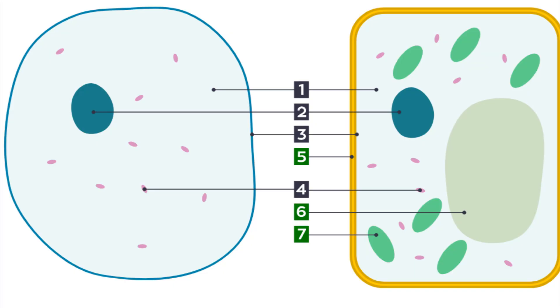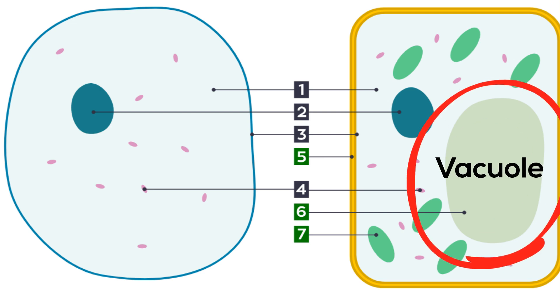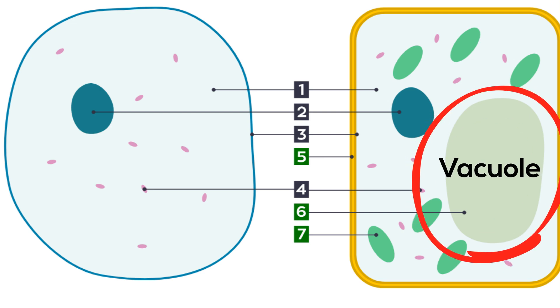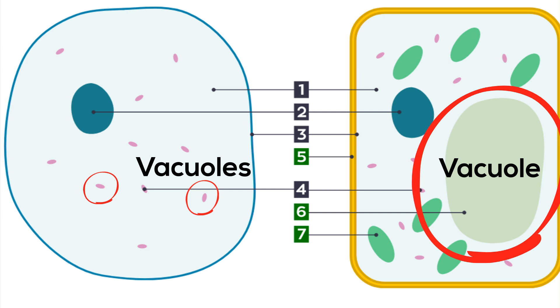And finally, a plant cell has a much larger vacuole than an animal cell. Take a look at the difference between the vacuole in the plant cell and the vacuoles in the animal cell.